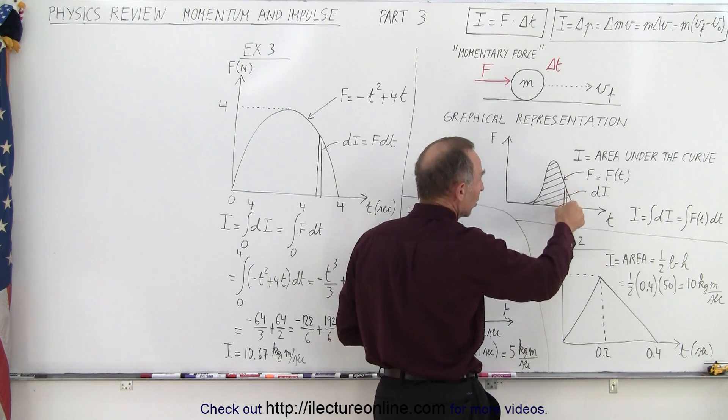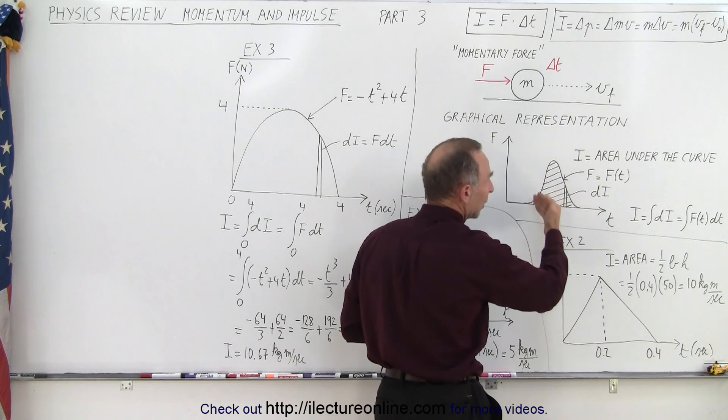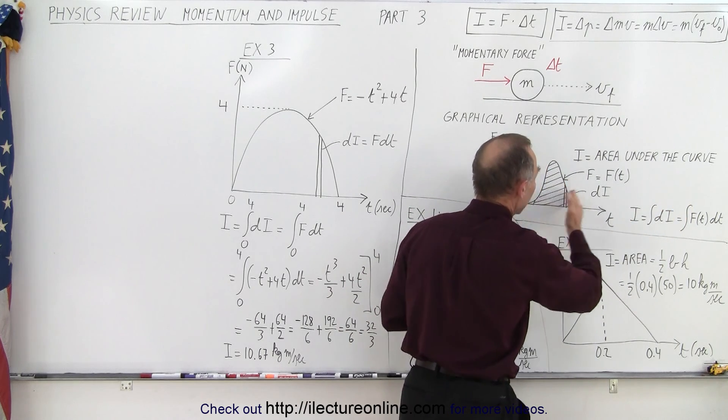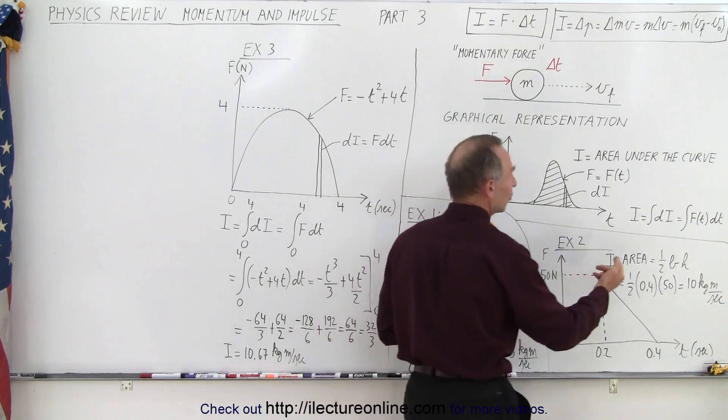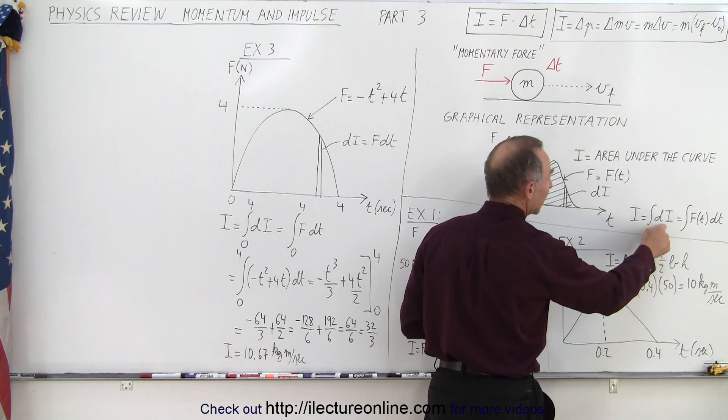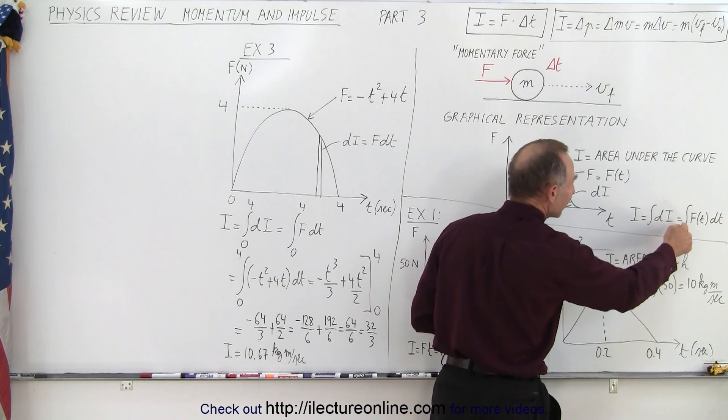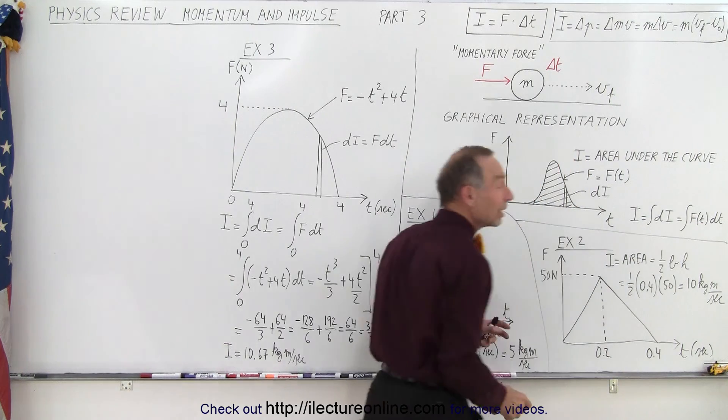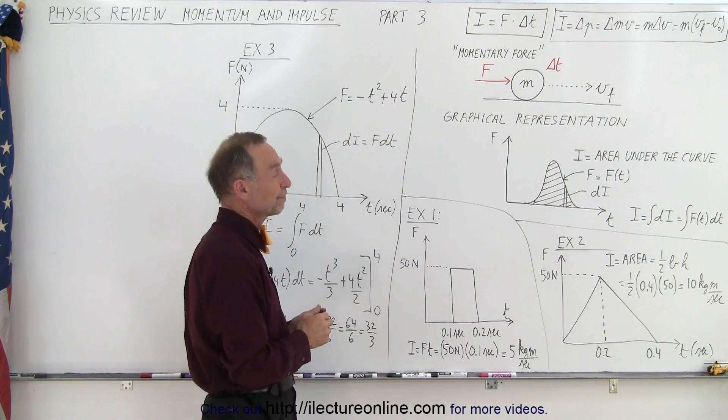And then we simply take a small amount of that, call it a di, and then we integrate it over the whole area underneath the curve. And so essentially impulse is the integral of di, which is the integral of the force times dt. And we'll show an example of that so it actually makes some sense to you.